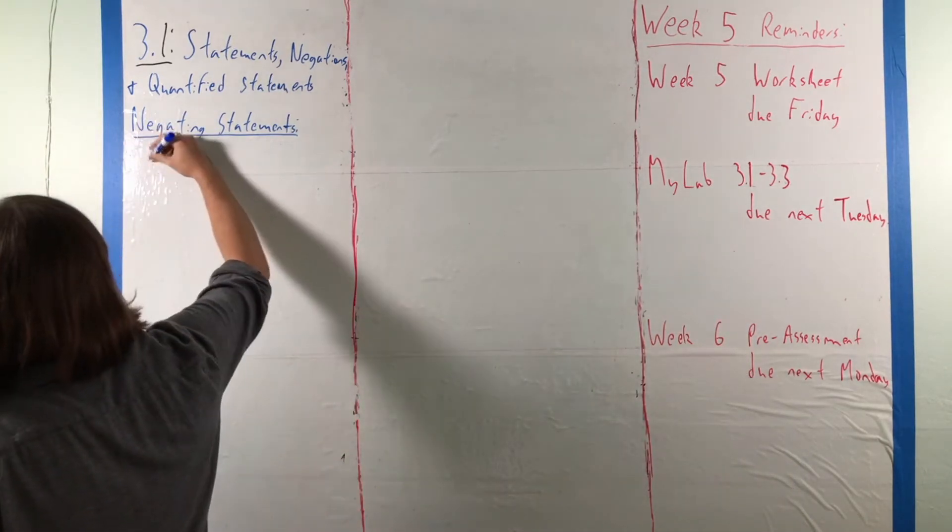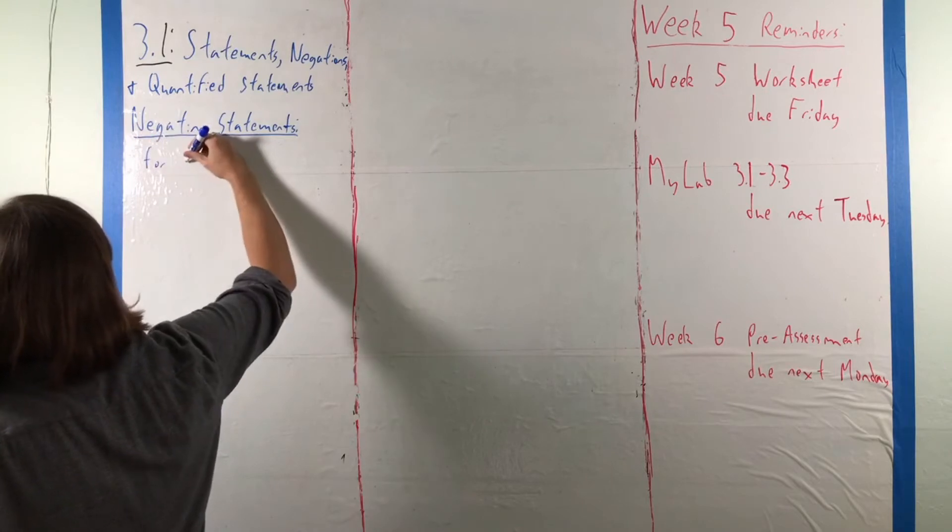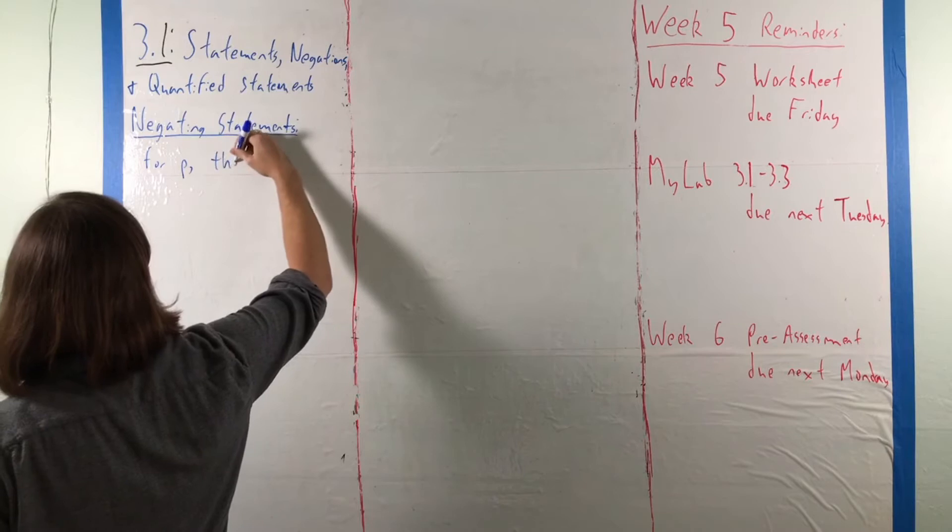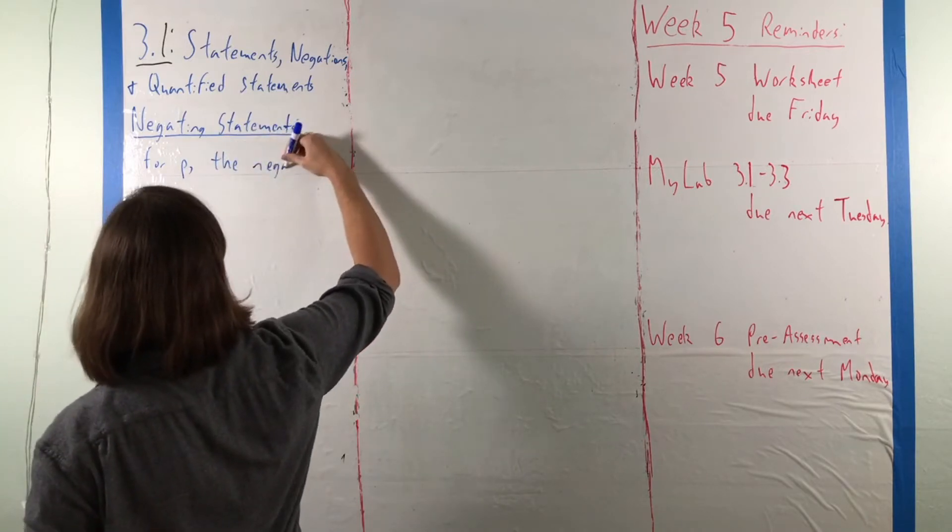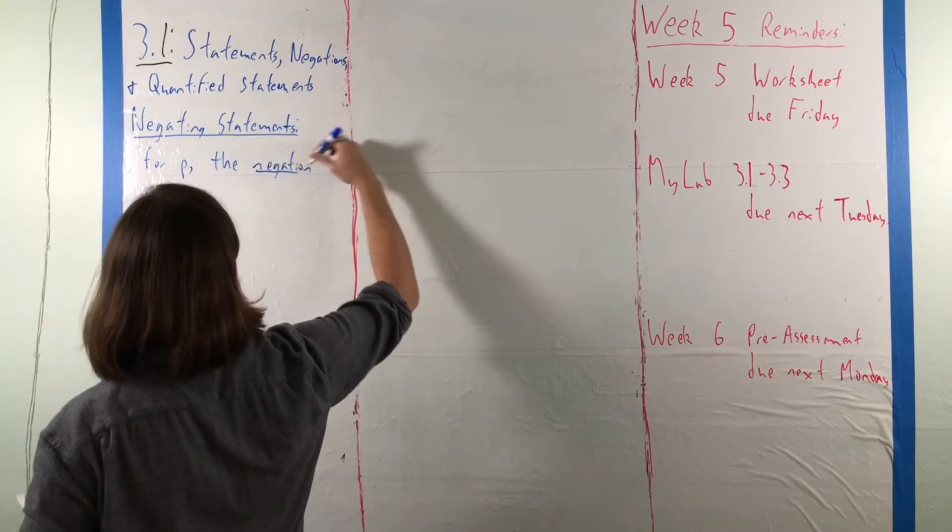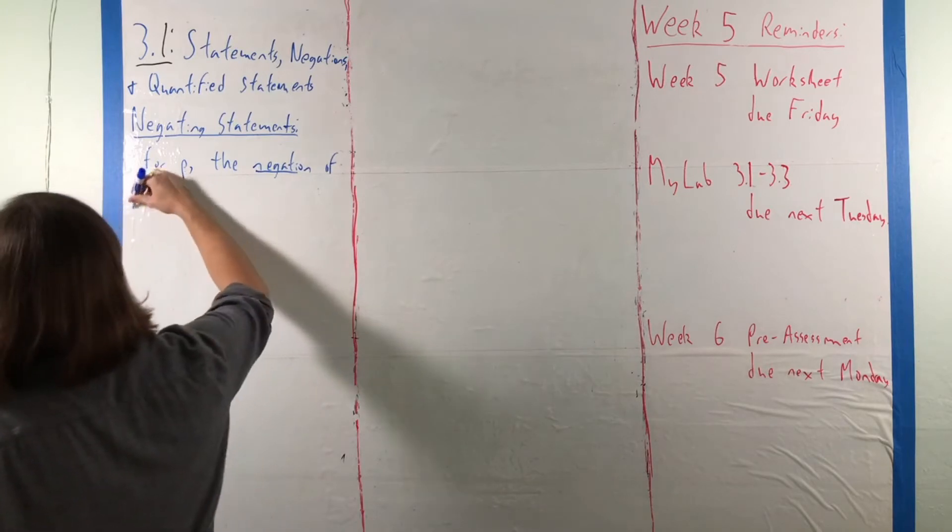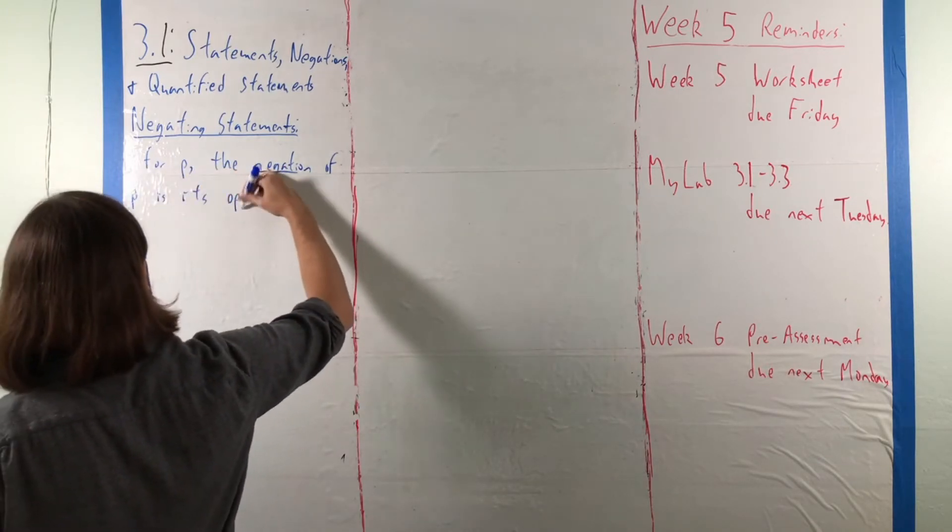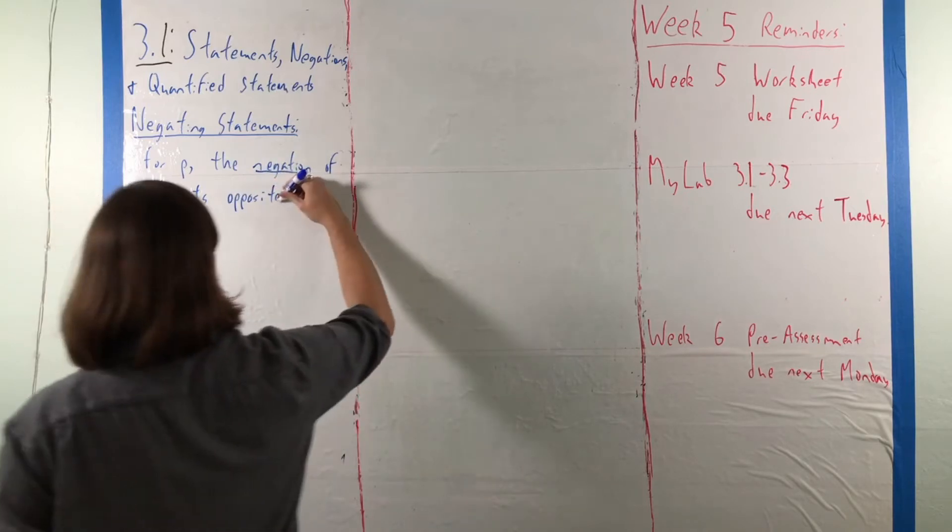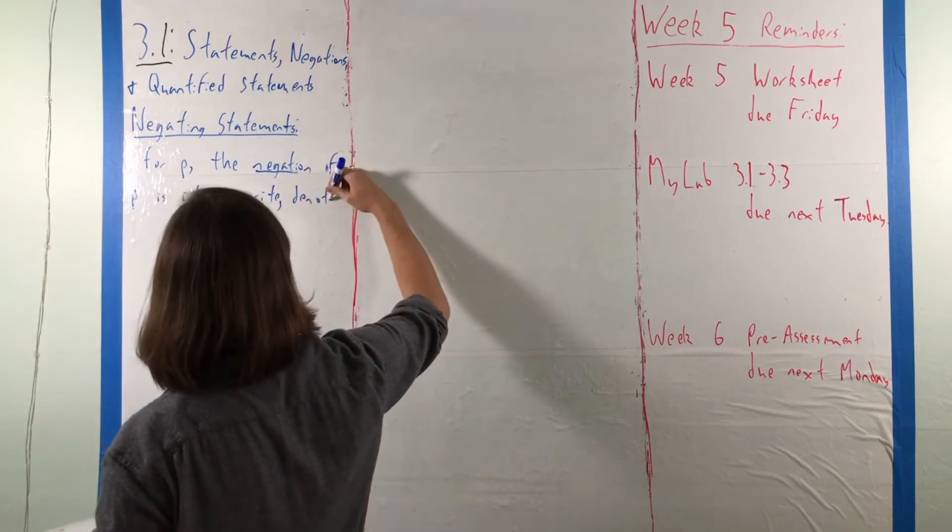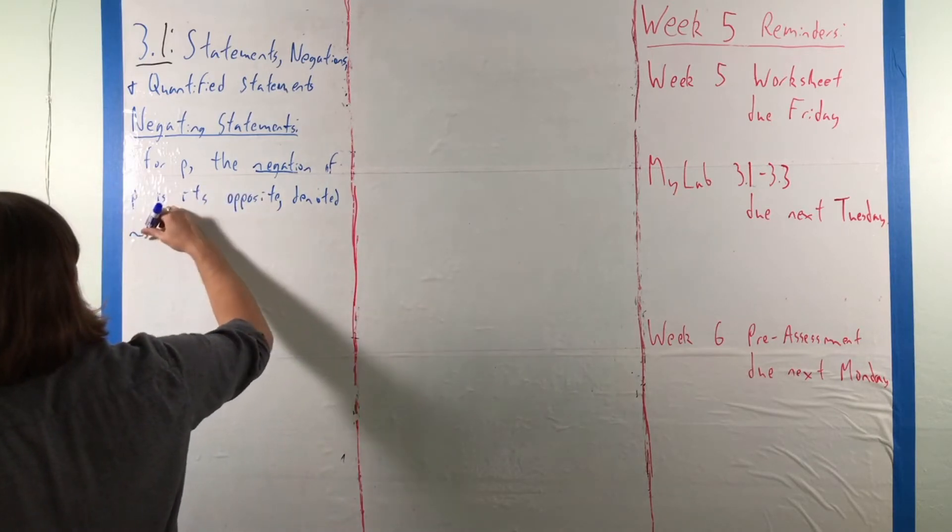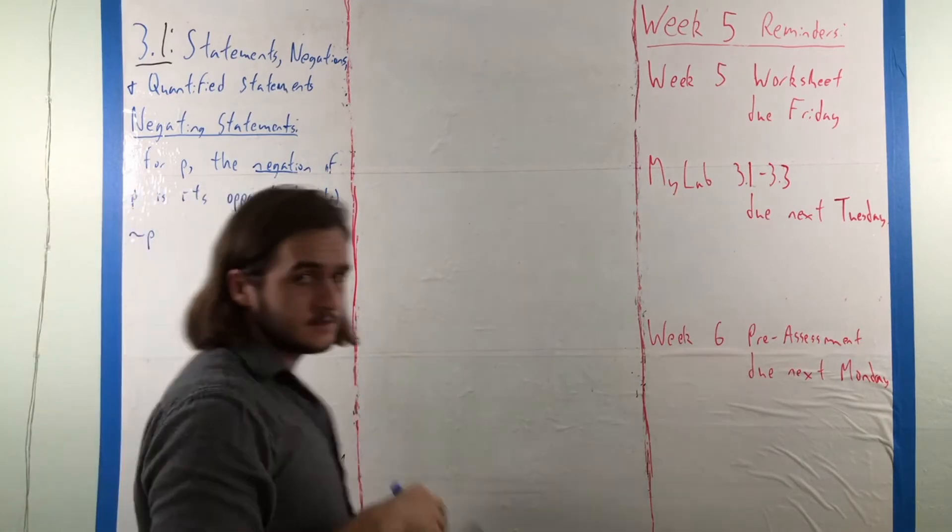In some statement P, the negation of P is its opposite. We denote this the tilde. We write negation of P as tilde P.